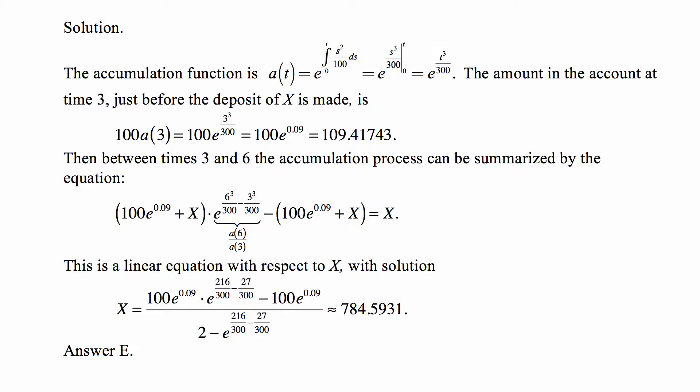That's 27 divided by 300, which is the same as 0.09. So it's 100 times e to the 0.09, or approximately 109.42. I have more digits here but it's roughly that amount.